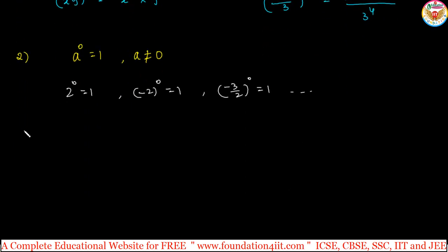And next rule, negative index. If a is non-zero, then a to the power minus m you can write 1 by a to the power plus m, and 1 by a to the power minus m is a to the power m. So this power is negative. If you want to make it as positive, just interchange. Denominator will become plus. If it is 1 by a power minus m equals a power m.